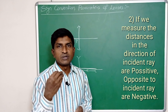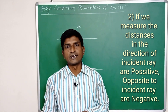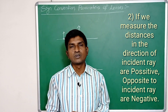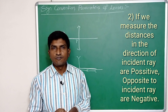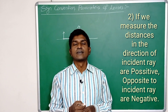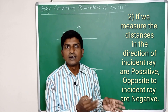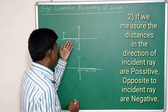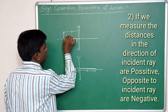The second sign convention: if we measure distances in the direction of the incident light ray, then those distances are positive. If we measure opposite to the incident light ray, then those distances are taken as negative. For example, in the case of a convex lens, a parallel light ray comes from the object.